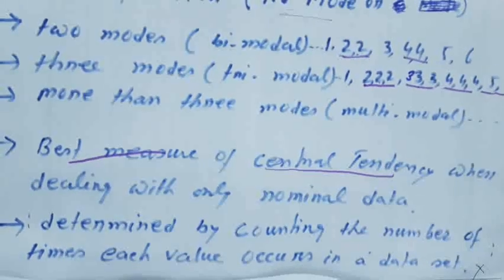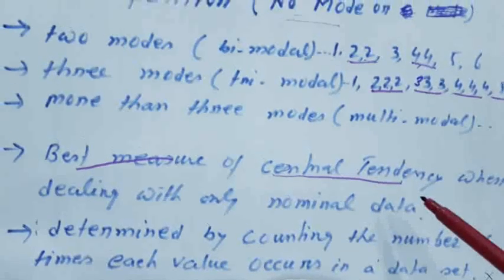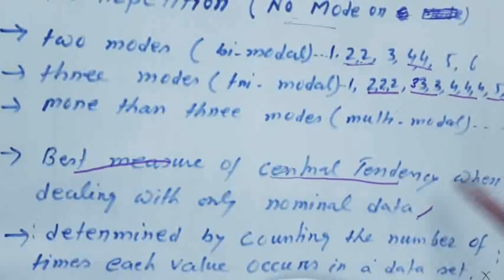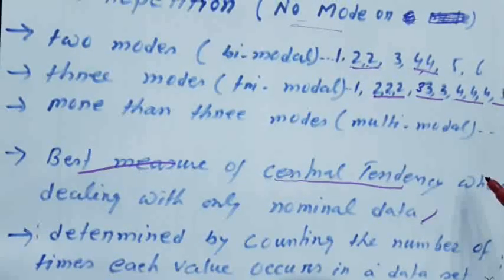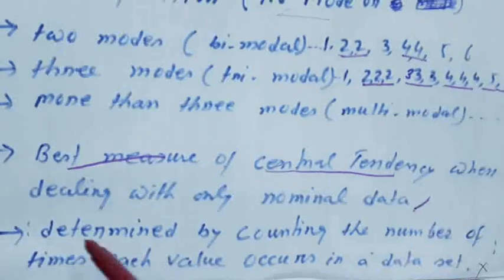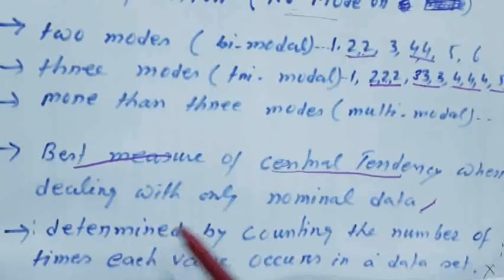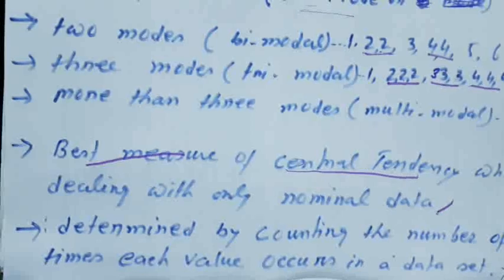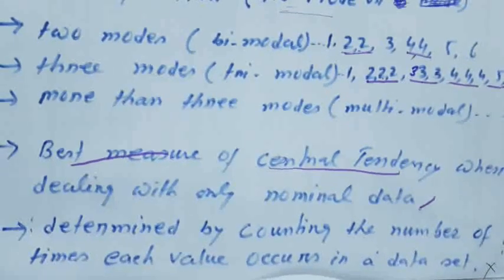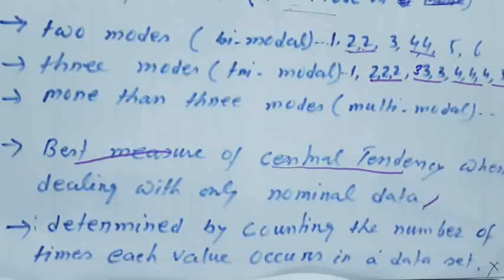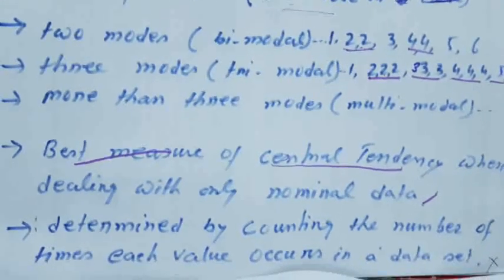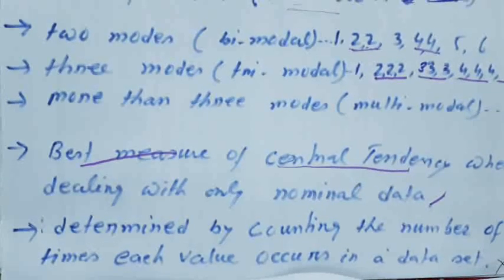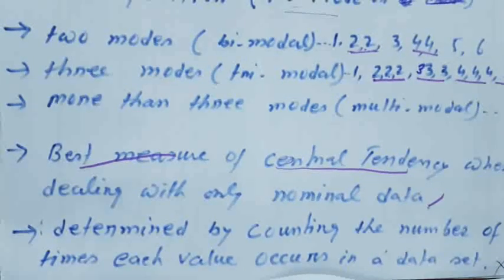We can further say that mode is the best measure of central tendency when dealing with nominal data, because mode deals only with nominal data — not relative values, proportional values, or percentages. This mode is determined by counting the number of times each value occurs in a data set. To get the mode, we have to count the frequency of each value — the value which has the highest frequency will be considered as the mode.